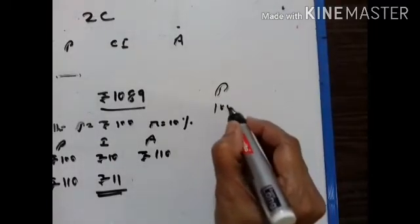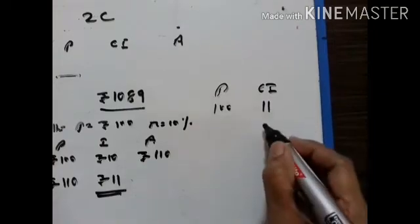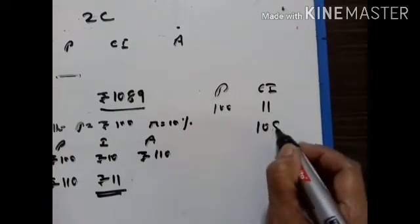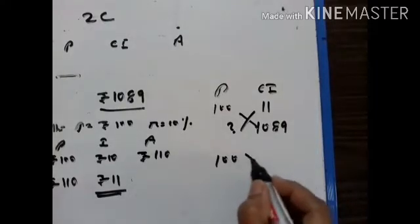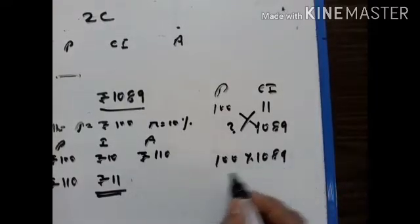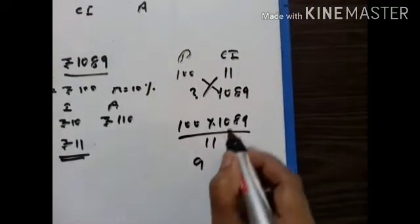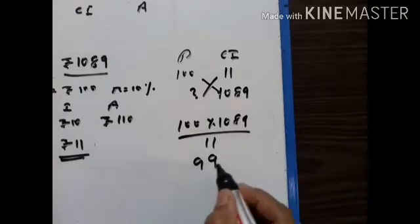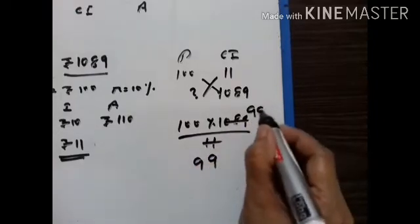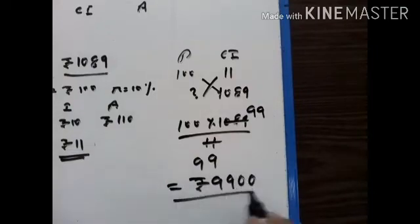When the principal is equal to 100, the compound interest for the second year is equal to Rs. 11. Therefore, if the compound interest is Rs. 1089, what is the principal? 100 into 1089 divided by 11. 11 nines are 99, 9 remains, 11 nines are 99, 99 into 100 is equal to Rs. 9900. This is the sum.